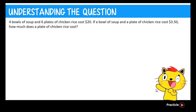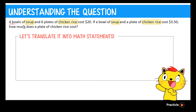After reading this question, I need you to think about what the question is all about. Here we have bowls of soup as well as plates of chicken rice. In order to simplify the question, let's write what we know in mathematical statements. From the first sentence, we know that if we were to buy 4 bowls of soup and 6 plates of chicken rice, we would have to pay $20. So we should write: 4 soup + 6 chicken rice = $20.